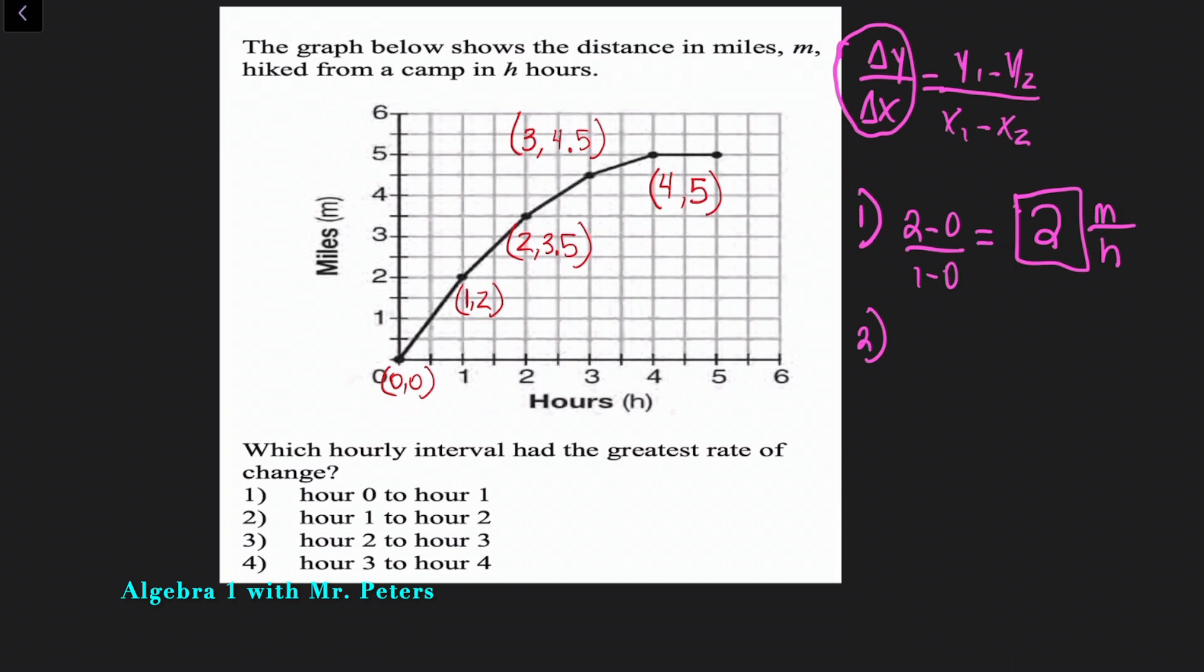So now we go on to the second one and now we're going from hour one to hour two. So now the coordinates change. So we have three point five minus two all over two minus one. We get one point five over one, which is just the same as one point five. So that's the second one. We know that's probably not right because the average rate of change from the first hour zero to one is greater.